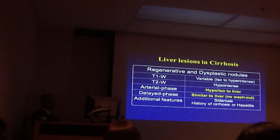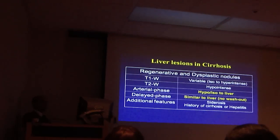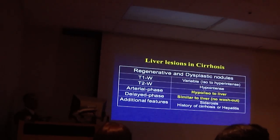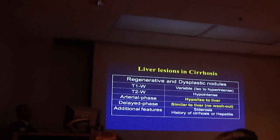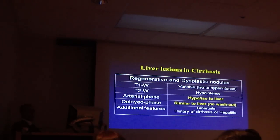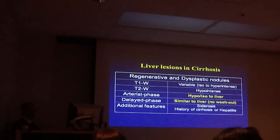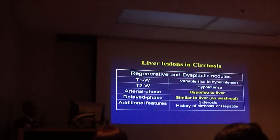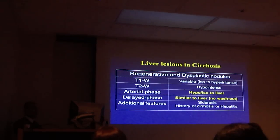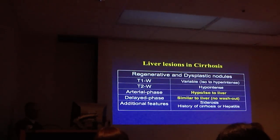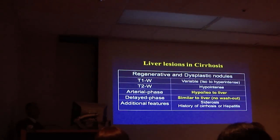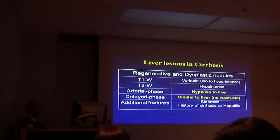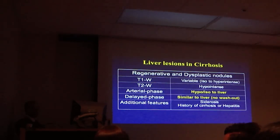Liver lesions in cirrhosis — regenerative and dysplastic nodules. T1-weighted images: variable. T2-weighted images: hypo-intense. If it becomes hyper-intense on T2, you're sort of worried. Margin and washout are the two things you can hang your hat on. Arterial phase: hypo- to iso-intense to liver. Delayed phase: similar to liver, no washout.